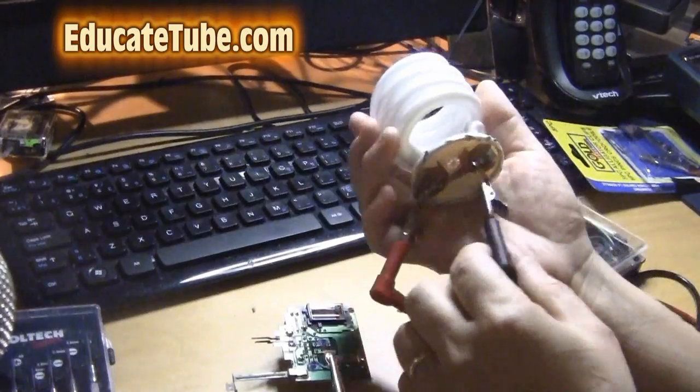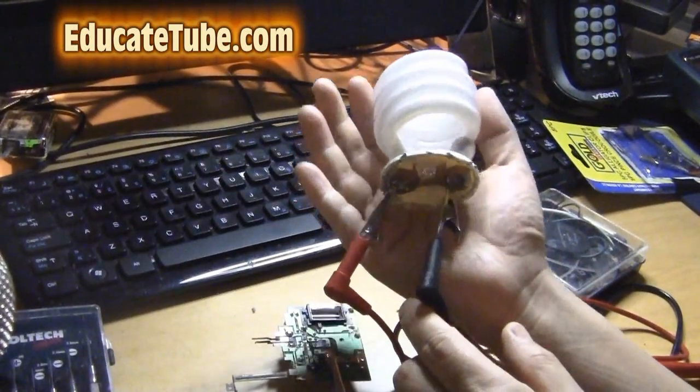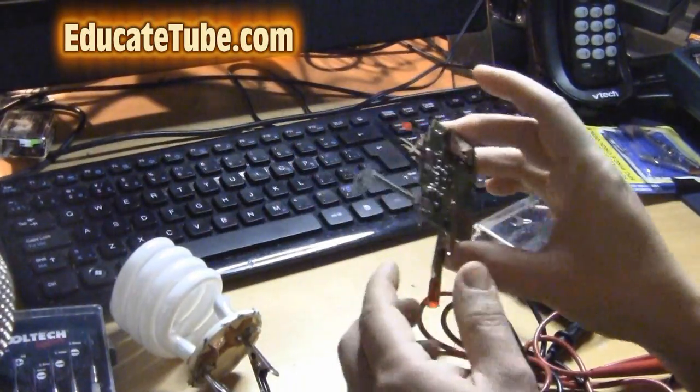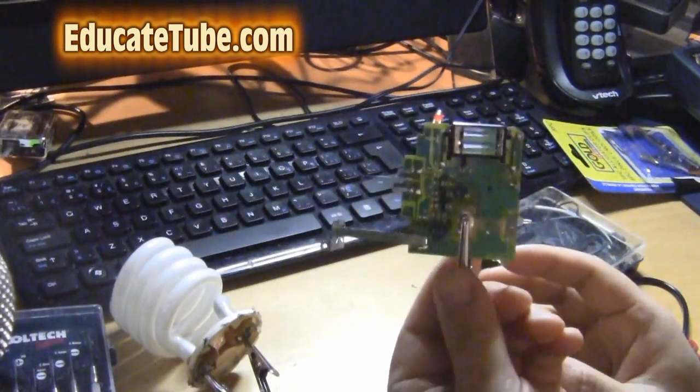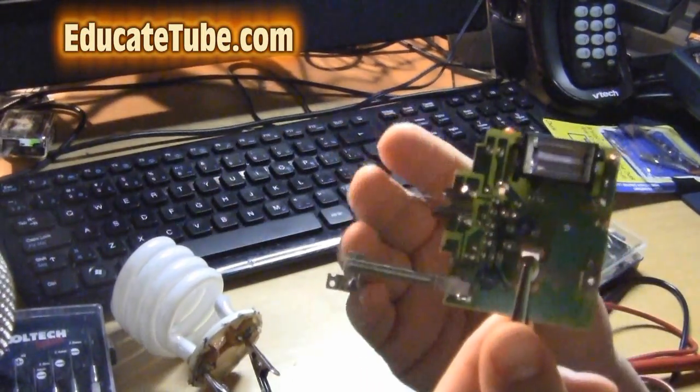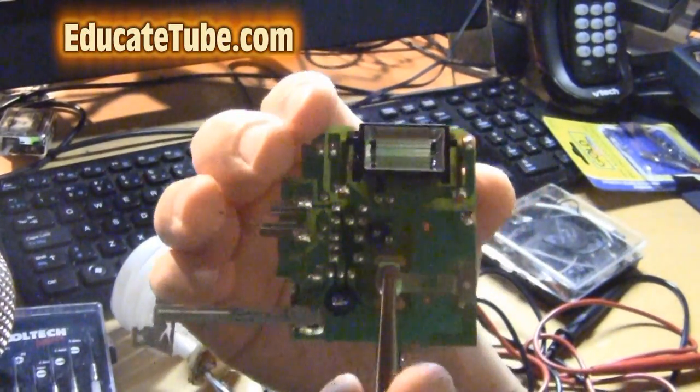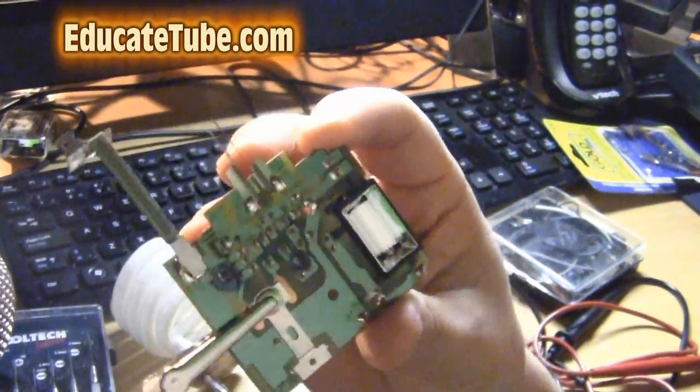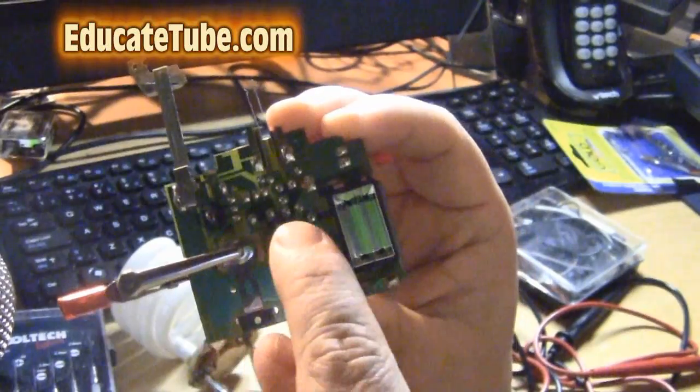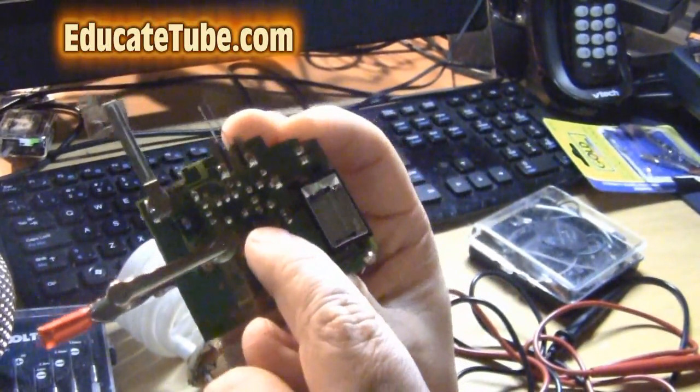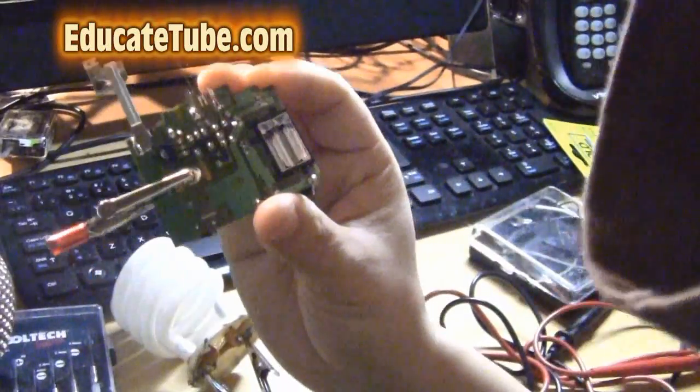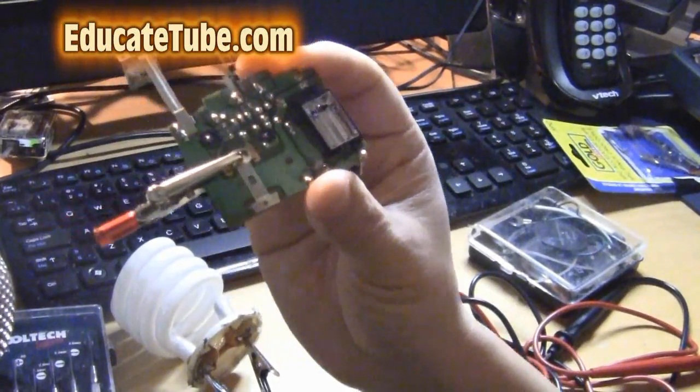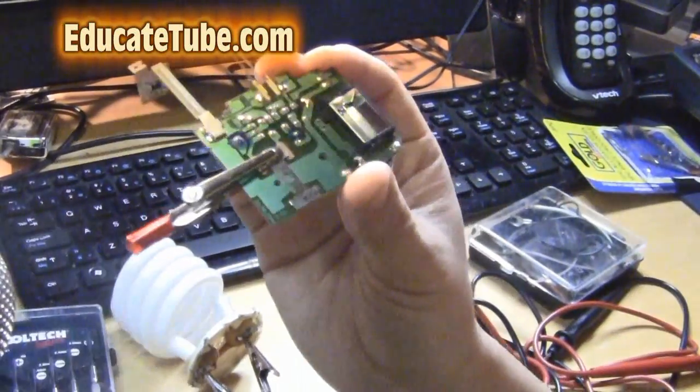Now, we're going to take the Compact Fluorescent light bulb and attach it to the disposable flash camera. I'm going to show you the circuit. Now, you have to locate it. If you might want to pause the video, there's a positive and negative terminal right there. We're going to attach the Compact Fluorescent light bulb terminal positive and negative to that.